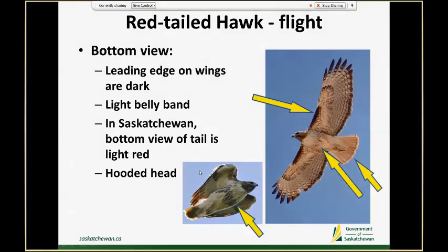Red-tailed hawks are pretty common out in parts of the study area. As they're flying by, the bottom view has a couple of distinctive traits. One of the best traits that's really consistent across most red-tails are the patagial dark leading edges on the wings — dark shoulder patches that can be seen in different forms of red-tails and can be quite distinctive. Another trait I like to use is the belly band that goes across the belly, which is often visible even if they're high up in the air.